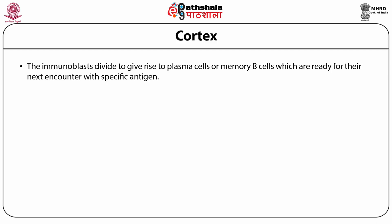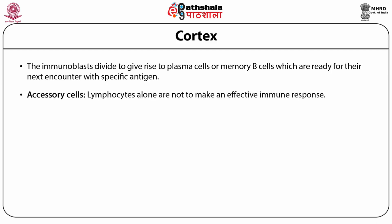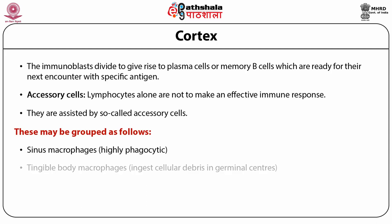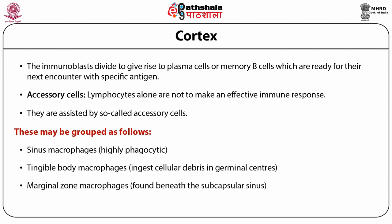In addition to B cells, the cortex also contains accessory cells. Lymphocytes alone are not able to make an effective immune response; they are assisted by accessory cells, which may be grouped as: sinus macrophages, tangible body macrophages, marginal zone macrophages, and follicular dendritic cells.